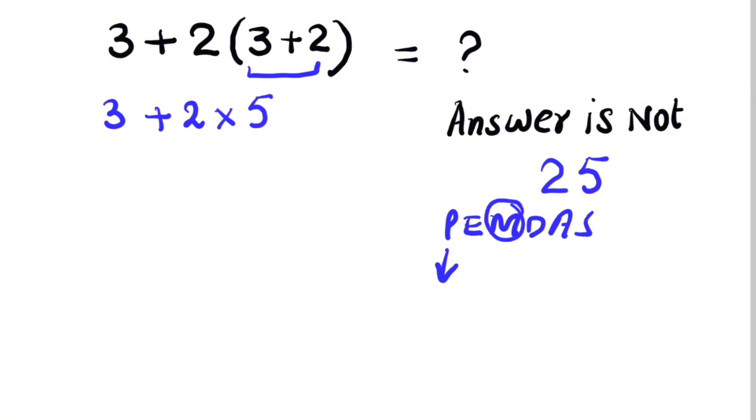Now we have to use multiplication. So 3 plus, 2 times 5 is 10. So now there is simple addition. So 3 plus 10 will be equal to 13.